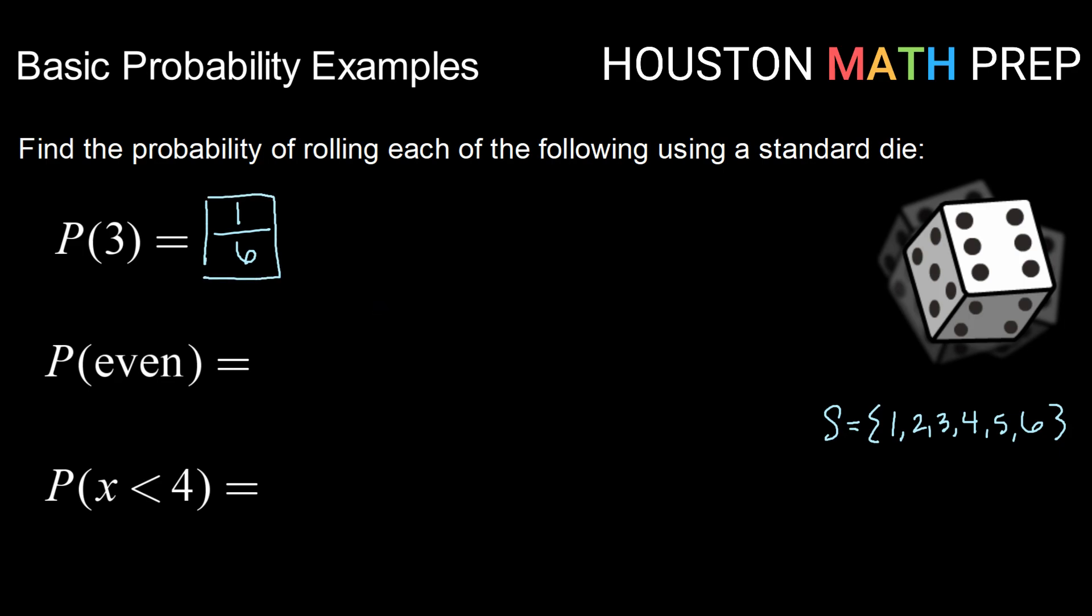That would actually be true no matter what value I had put right here. The probability of rolling a three on a fair die would be exactly the same as the probability of rolling, say, a five.